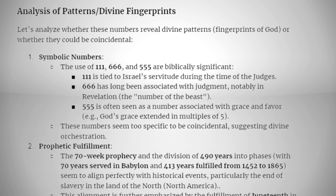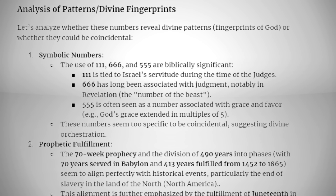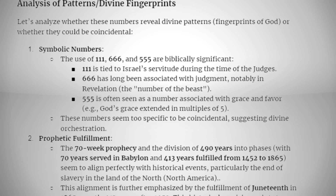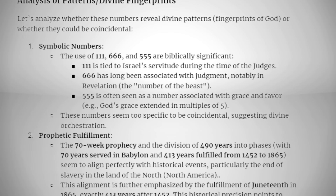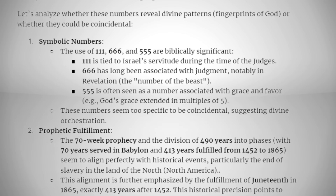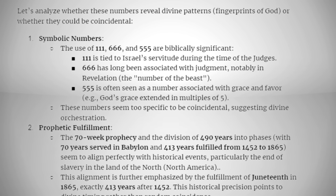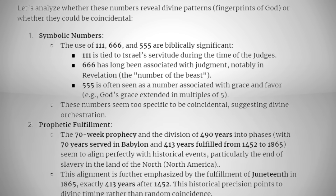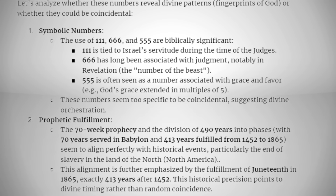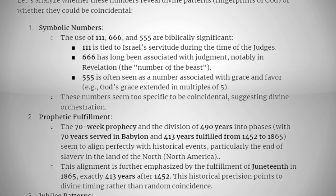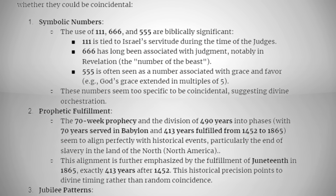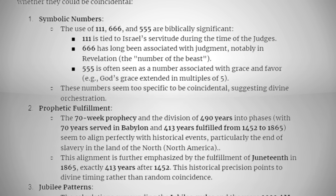Let's analyze whether these numbers reveal divine patterns — fingerprints of God — or could be coincidental symbolic numbers. The use of 111, 777, 666, and 555: 111 is tied to Israel's servitude during the time of the judges; 666 has long been associated with judgment, notably in Revelation as the number of the beast; and 555 is often seen as a number associated with grace and favor. These numbers seem too specific to be coincidental, suggesting divine orchestration.